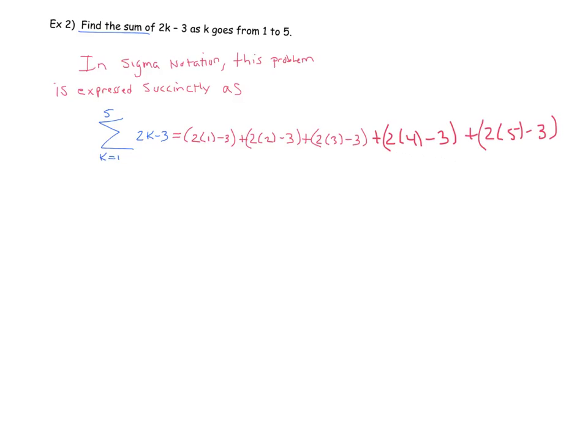When I plugged in k equals 1, I got that term. K equals 2, I get that term. K equals 3, K equals 4, and K equals 5. Then I stop because 5 is the last number up here on the top of the sigma symbol.